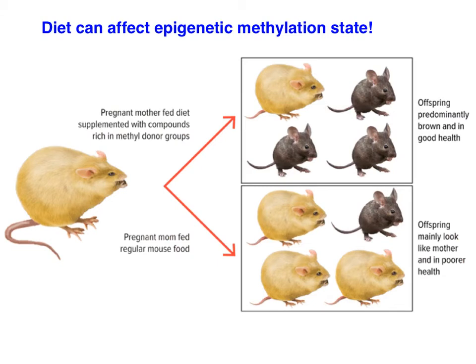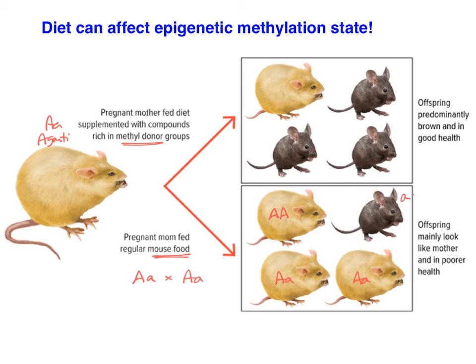Diet can affect the epigenetic state of your DNA — it can affect the methylation level of your DNA. Here we have a pregnant heterozygous agouti mom fed either a diet rich in methyl groups or a regular mouse diet, crossed with a heterozygous dad. If the mouse is fed regular food, we expect to see a homozygous dominant, two heterozygous individuals, and a homozygous recessive individual.